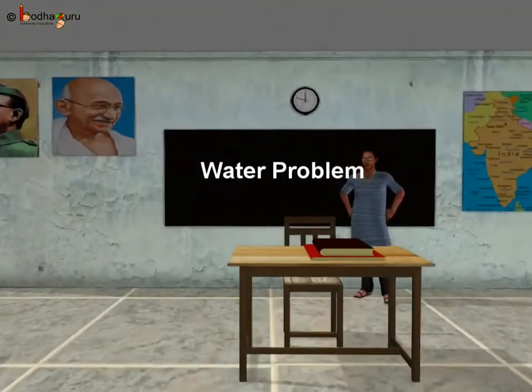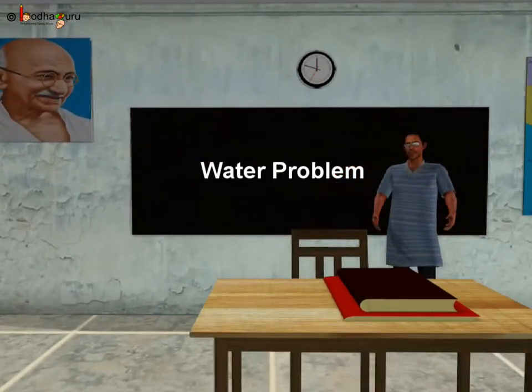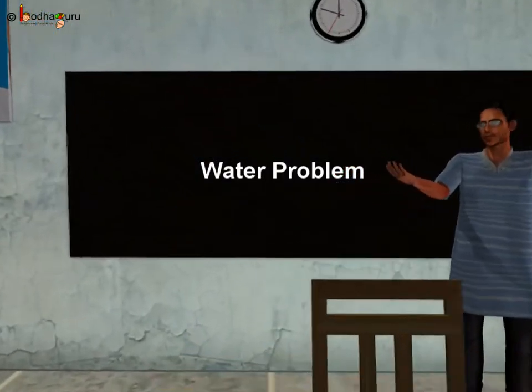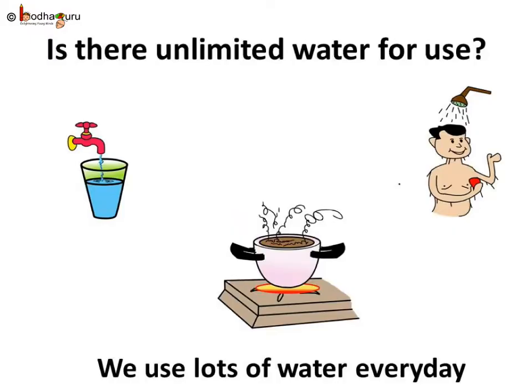Hello children. In our previous video we learnt about the water cycle. Water is very useful. We use lots of water every day for many purposes. We have been using water for thousands of years. Then why does all the water not get used up?